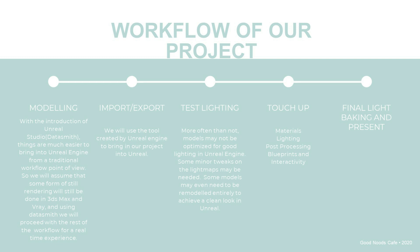We're going to go through the workflow of our project. The first part is modeling. When we start a project, we will have a layout file of the house we want to model or do archvis on. These layout files are usually in a picture format — PNG or JPEG — so we will bring it into AutoCAD to trace out this layout into an AutoCAD format, which we then bring into 3D Studio Max. It's a lot easier to model with the layout file from AutoCAD rather than just a picture format.